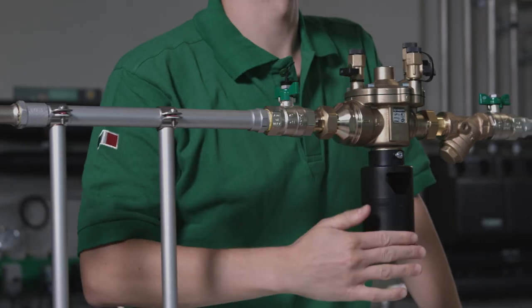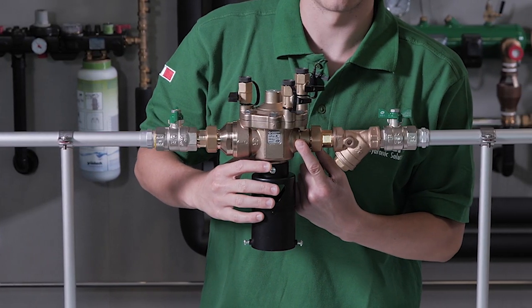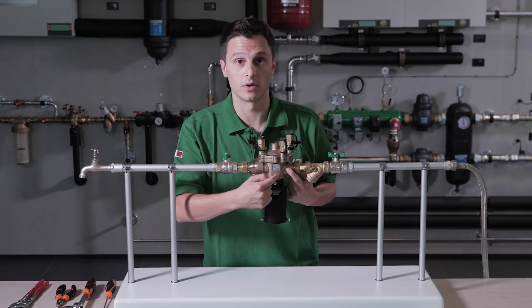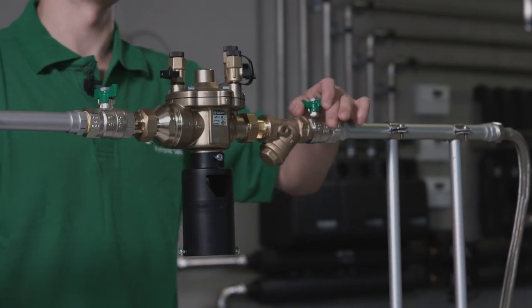and the backflow preventer keeps on leaking, it means that we have a failure in the upstream check valve or in the discharge valve, which is the central component of the backflow preventer. So let's close the upstream shutoff valve